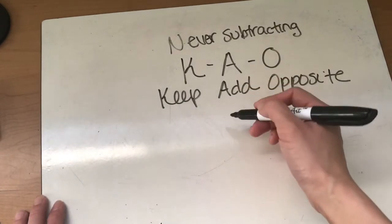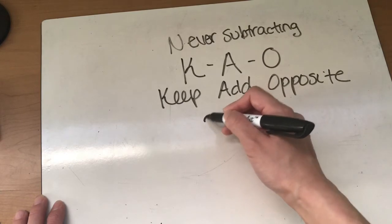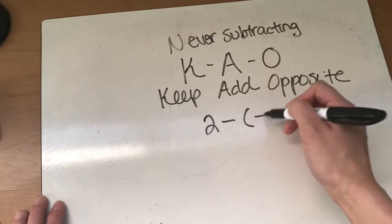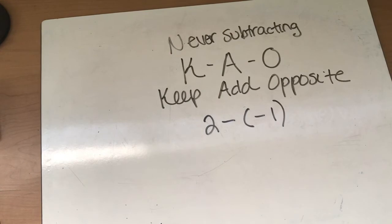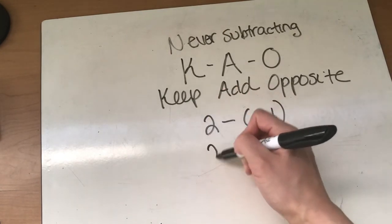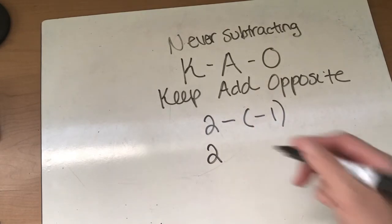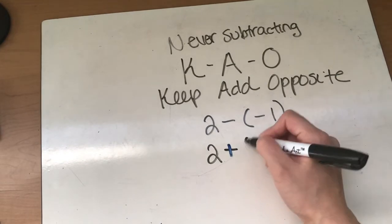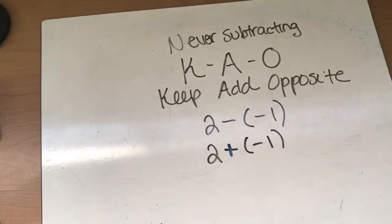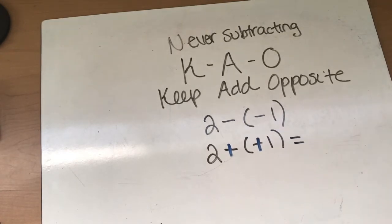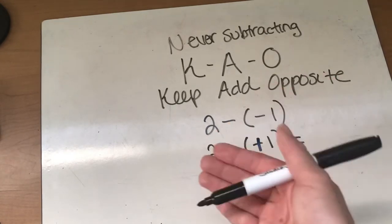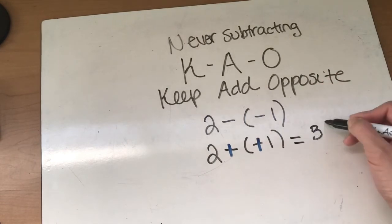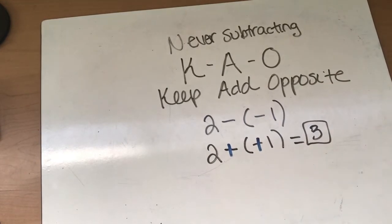So in our first example, I'm just going to throw in some numbers here. We have 2 minus negative 1. Okay, so again we are never subtracting. We're going to keep this front number so 2 is going to stay the same. Our subtract is going to change to an add. And then our negative 1 is going to change to the opposite which is positive 1. So now our question becomes 2 plus 1 which is 3. Crazy!